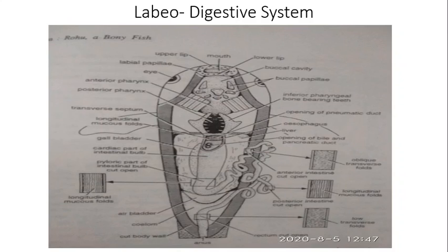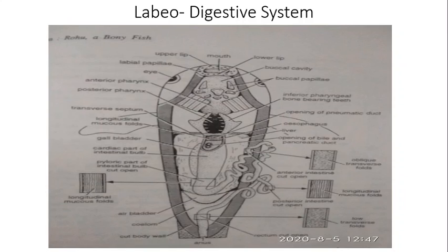The intestinal bulb has an anterior broader cardiac part, into which the pancreatic and bile ducts open, and a posterior narrower pyloric part without pyloric caeca. The mucus lining of the cardiac part shows honeycomb-like folds, and the pyloric part contains longitudinal folds. Gastric glands are absent in the intestinal bulb.